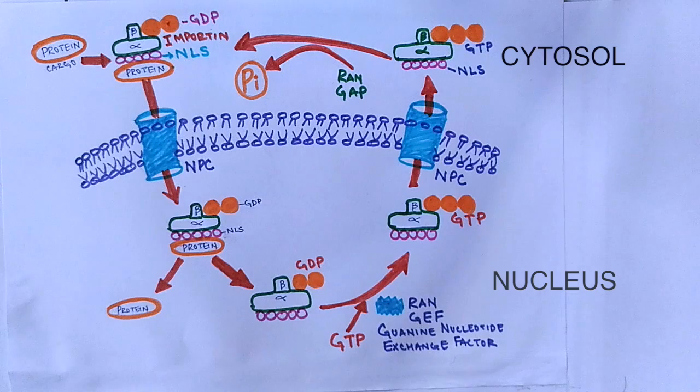So we see here we are back to the same complex from where the cycle had started. The cycle for export is the same but in the reverse direction and with the nuclear export signal.